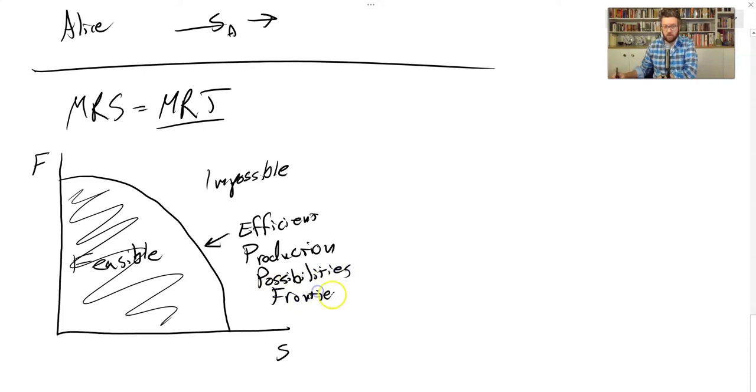That's what we're looking for here. And this marginal rate of transformation is equal to the marginal product of labor for producing food divided by the marginal product of labor for producing shelter.